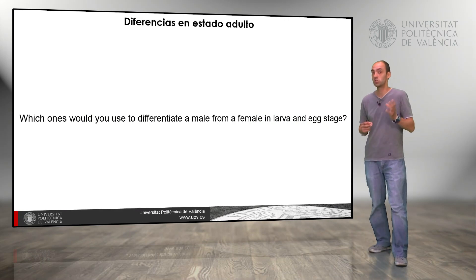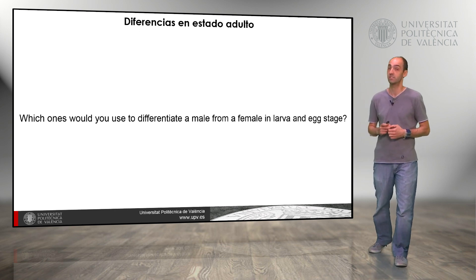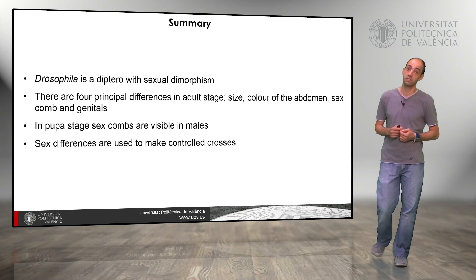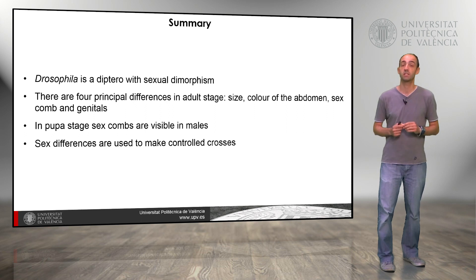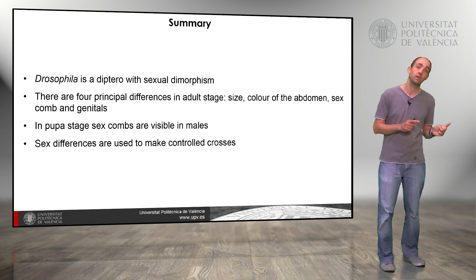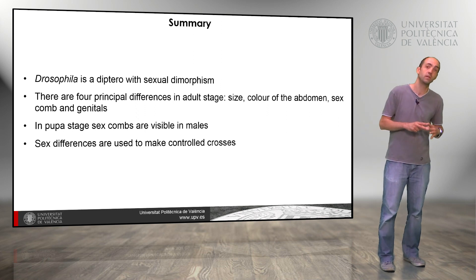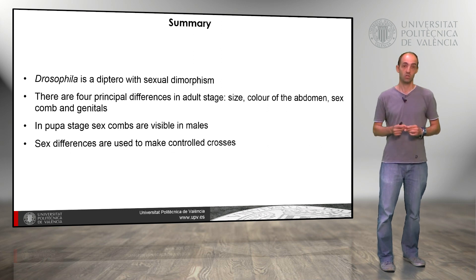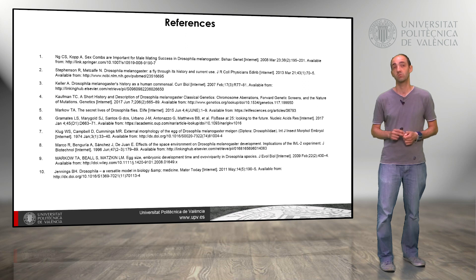Now think about which differences you would use to distinguish a male from a female in larval and egg stage. As a summary: Drosophila is an insect with sexual dimorphism. There are four principal differences in adult stage — size, color of the abdomen, sex comb, and genitals. In pupa stage we can use the sex comb to distinguish males from females. We can use these sex differences to make controlled crosses, selecting which ones are females and which are males. You can use the provided reference to go deeper into this topic. And with that, we finish — thank you very much.